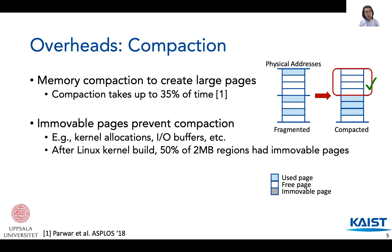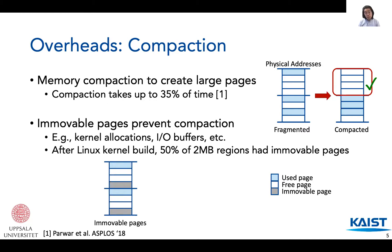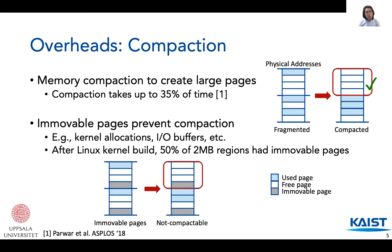To check the severity of immovable pages, we checked the physical memory state after a kernel compilation, which generates a lot of page caches. We found that about half of the allocated physical pages were in a 2MB region co-located with immovable pages, meaning these 2MB regions could not be compacted. Even if the operating system tries compacting, the immovable pages prevent reclaiming free space for a large page.